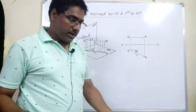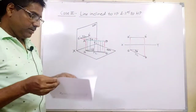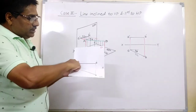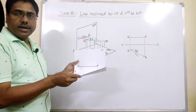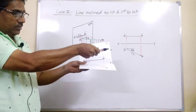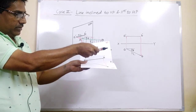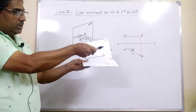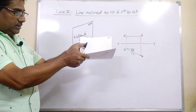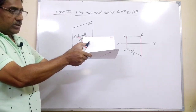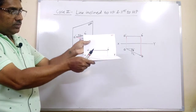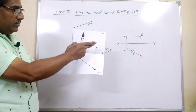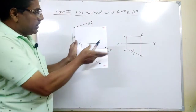This is easy to understand by referring to this model. This is the vertical plane, this is the horizontal plane, and the line common to both planes is the reference line XY. After holding this line parallel to the horizontal plane and inclined to VP, we get the top view with true length and the front view with short length. We then rotate the horizontal plane 90 degrees in the clockwise direction so as to make both views available in the 2D plane — front view a-dash b-dash and top view ab.